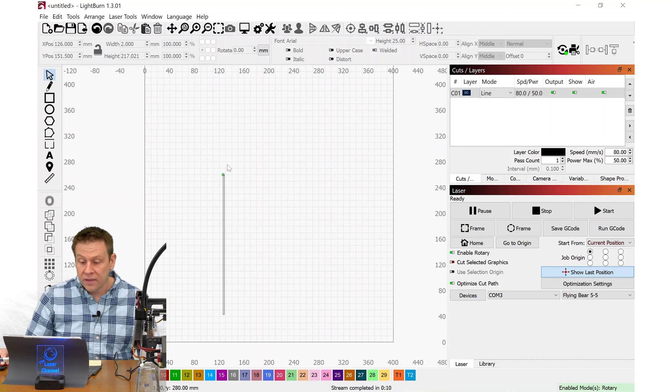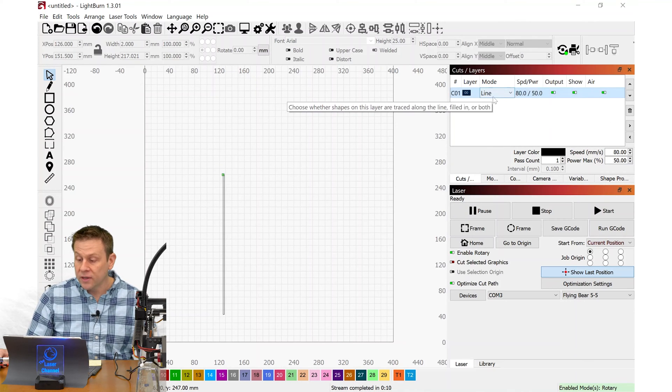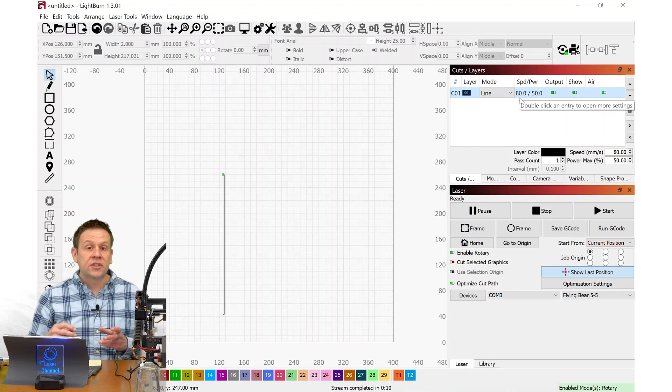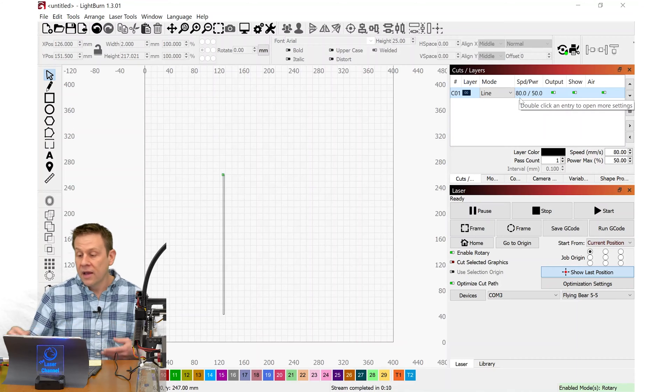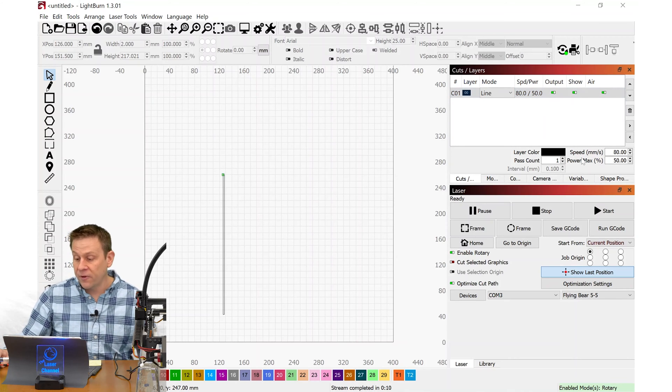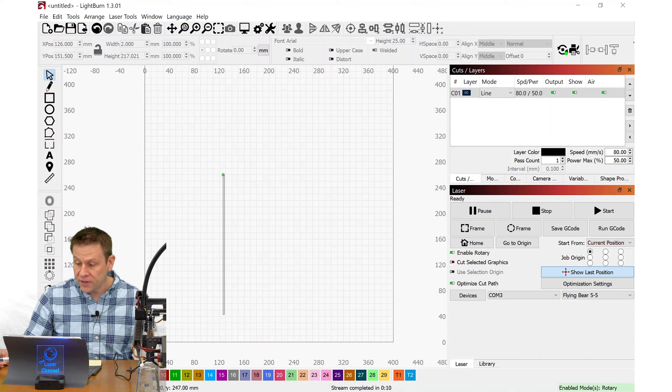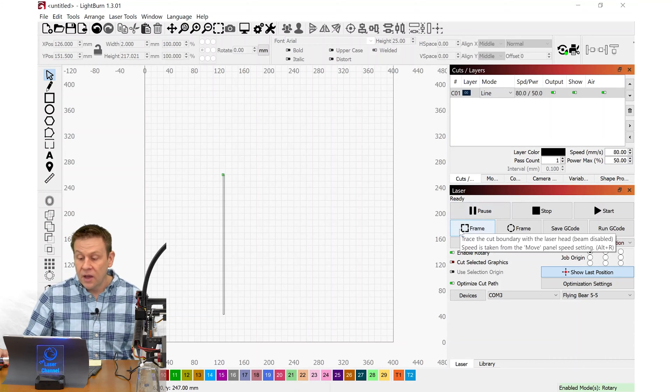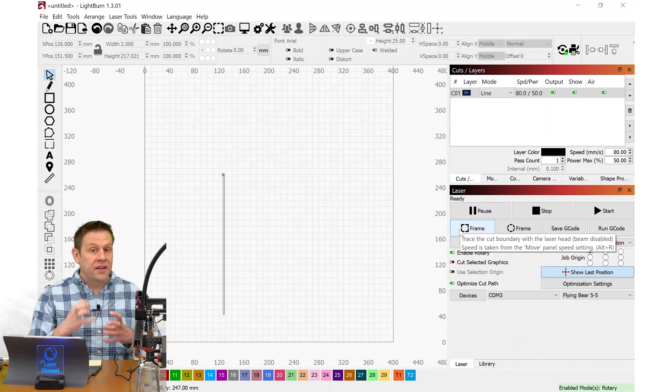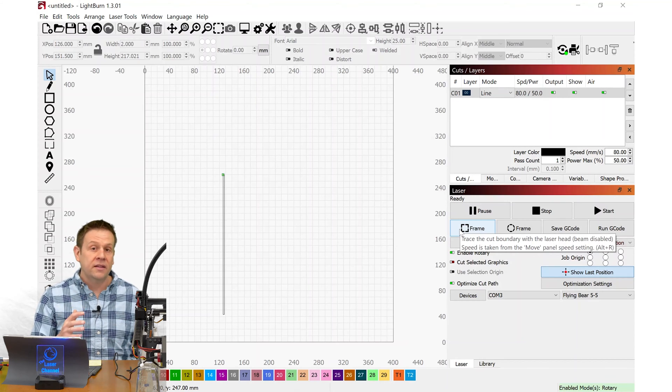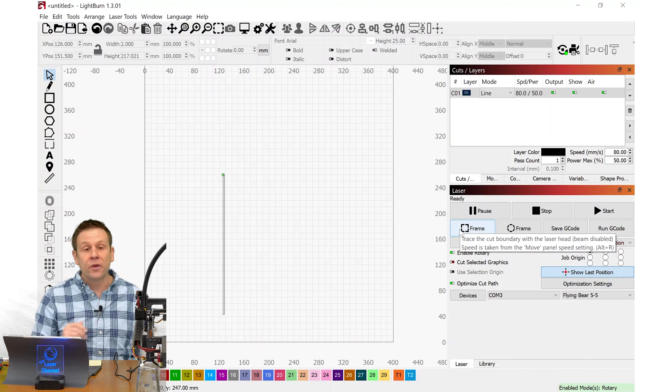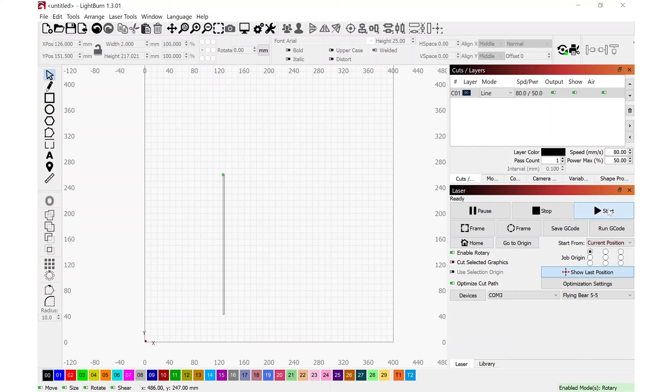Now that I've drawn this long rectangle, I can navigate to cuts and layers and I want to draw just a line. And all I want to do is just make a mark on this blue painter's tape. I can have a fairly high speed of 80 millimeters per second and a max power of 50%. And for this, when the laser does fire, it is going to light that jar up with that blue laser beam. I do want to have my green tinted safety glasses that came with the machine. I'm now ready to hit the start button.